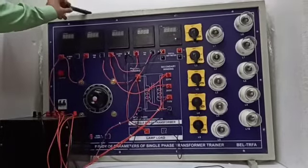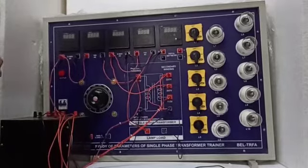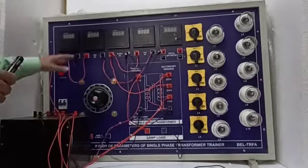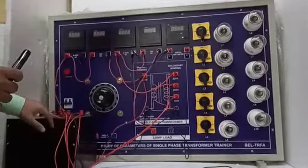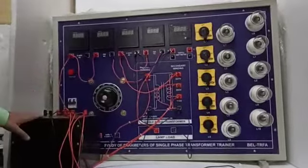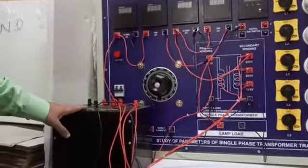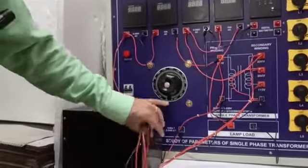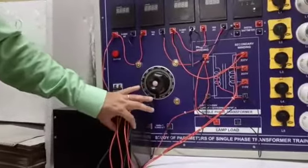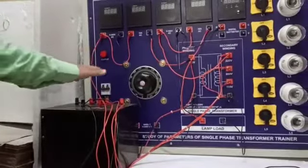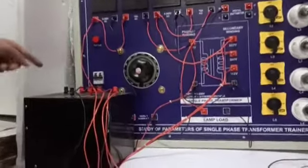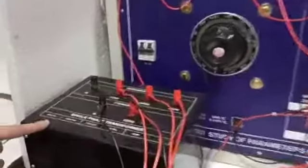This is an MS cabinet box which is rust proof and there are digital meters on this panel for better accuracy. This is a single phase transformer which is provided externally which needs to be connected with the wires that are given here.